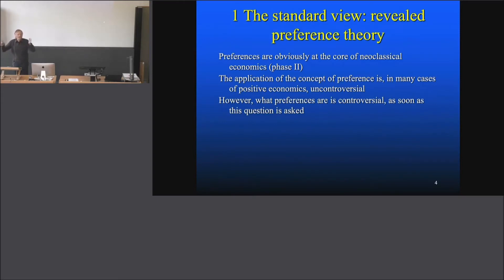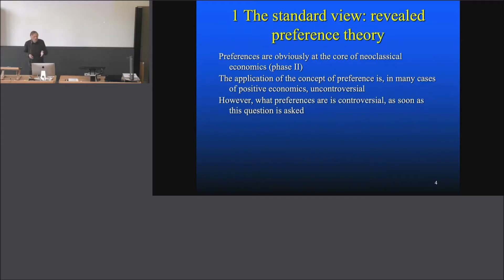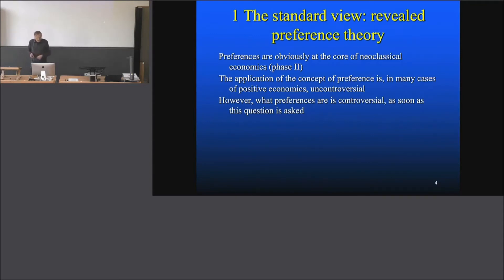Things seem to be clear until you ask a question — that's a classical topos in classical philosophy. Augustine said, 'Of course I know what time is. But as soon as you ask me what is time, then I am in trouble.' This is very similar here. Economists know what they're doing when they work with preferences, but as soon as you have to give an exact general definition or explication of what preferences are, controversy begins.